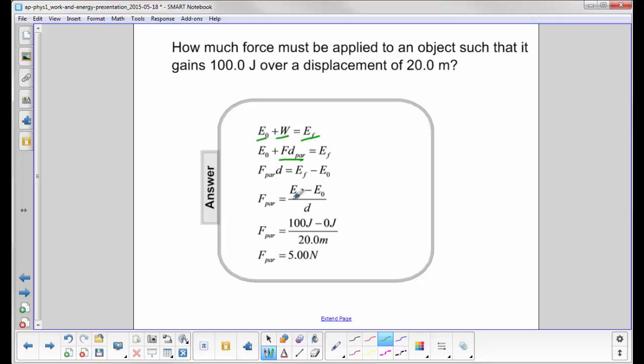So we have now the force is the final energy minus the initial divided by the displacement. Since it didn't give an initial energy, we may assume that it's zero joules. They would have to give us a number, and if they don't, we just say it's zero joules.